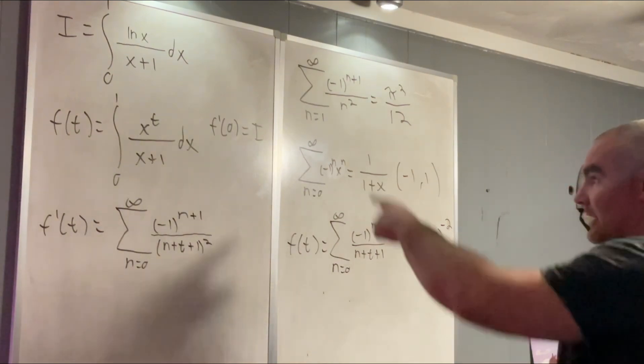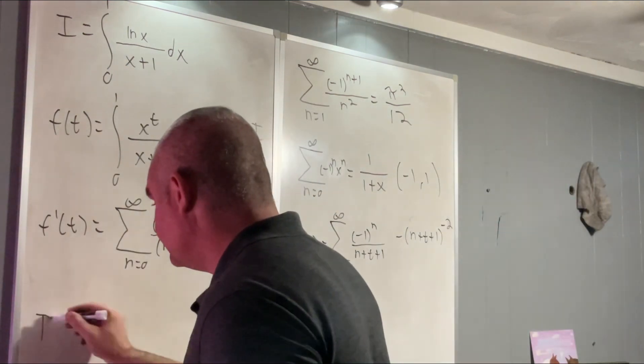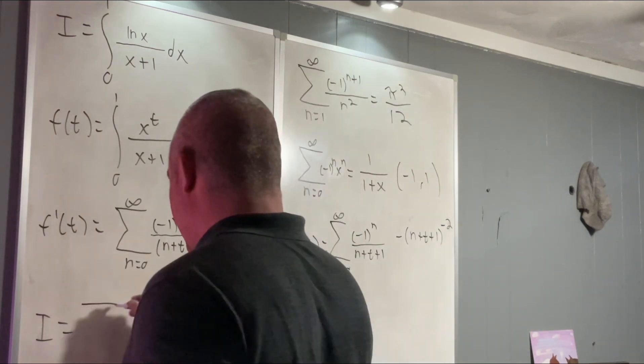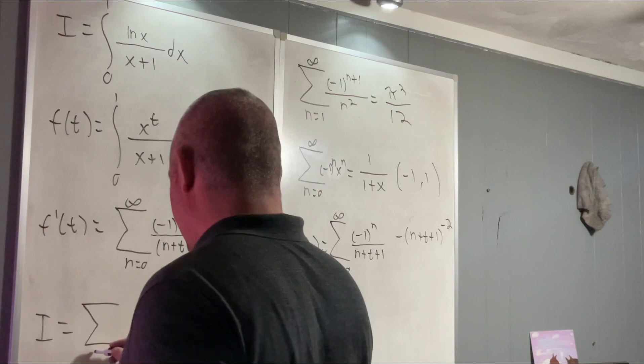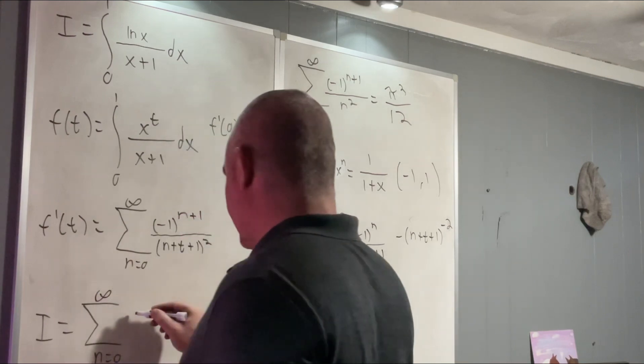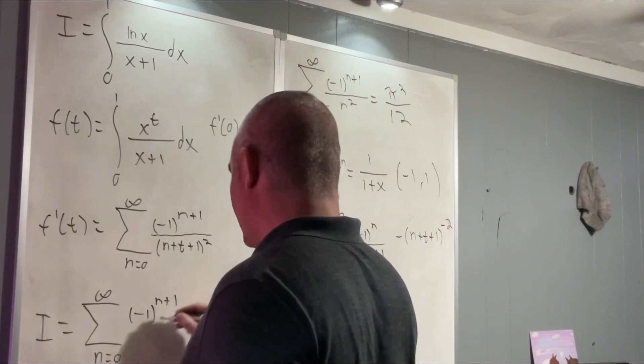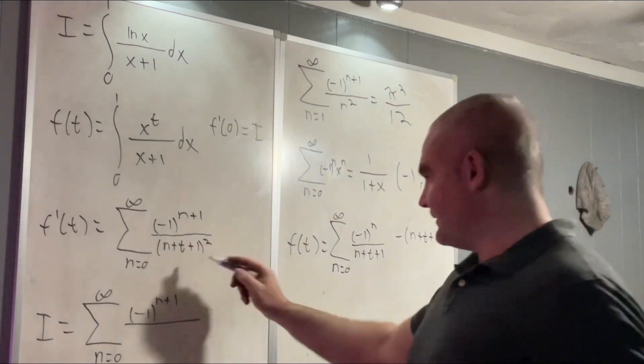Now, all we have to do is plug in 0 and we have I. So that means that I is equal to a sum from n equals 0 to infinity. And then we'll still have negative 1 to the n plus 1 over, we're plugging in 0 for this,